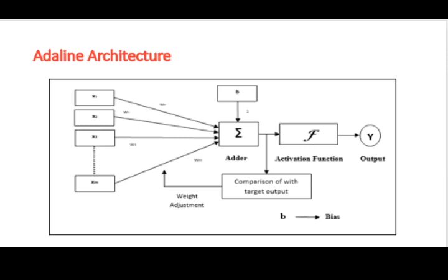If you look into the ADALINE architecture, you have the set of inputs, the set of weights and they go into an error function. Then you have an activation function and then you have the output represented as Y. Like a perceptron, this also has the inputs, the outputs, the weights, the bias B and so on.